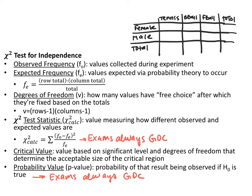The expected value is calculated as row total times column total divided by the total total. So the row total would be the total number of females, the column total would be the total for a sport like tennis, and total total is total people surveyed. Degrees of freedom, represented with the letter V, is how many values have free choice — basically how much variability you have in your data. It's calculated as the number of rows minus one times the number of columns minus one. For example, two rows gives one, three columns gives two, so one times two equals two degrees of freedom.